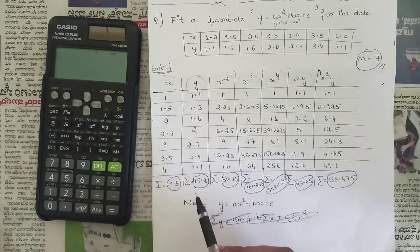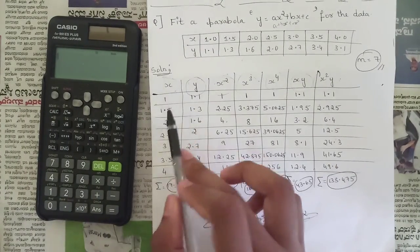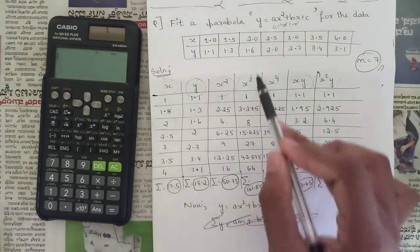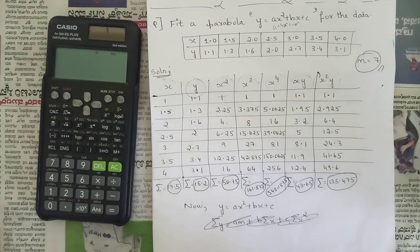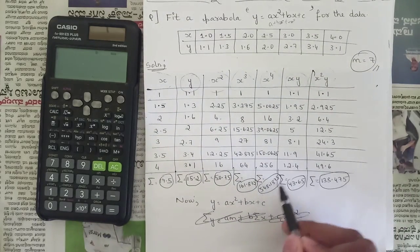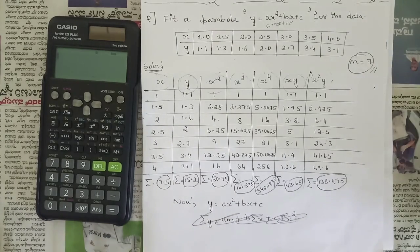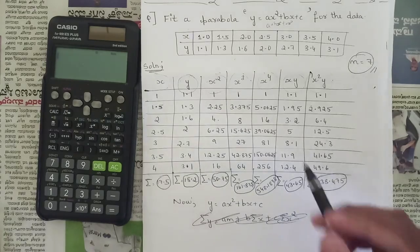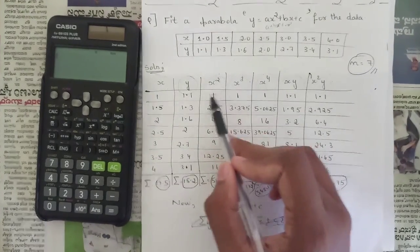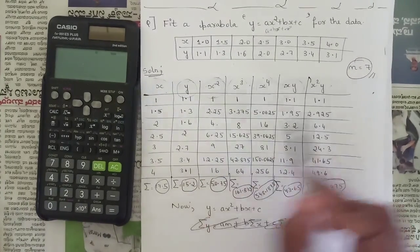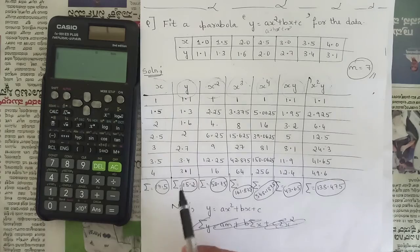Write all x values and sum them: summation x = 17.5. For y: summation y = 15.2. For x²: summation x² = 50.75. For x³: summation x³ = 161.875. For x⁴: summation x⁴ = 548.1875. Remember to write up to four decimal places. For xy: summation xy = 43.6. For x²y: summation x²y = 138.475.